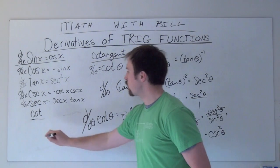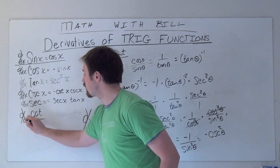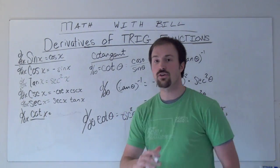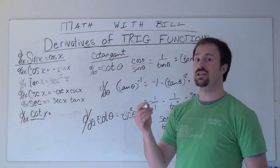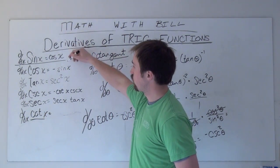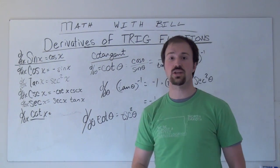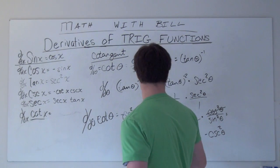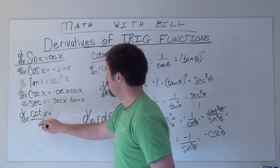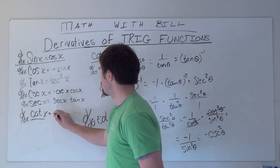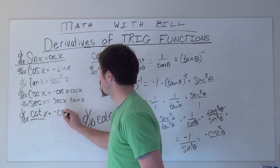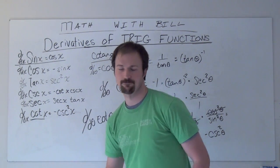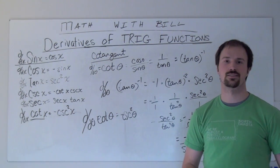That finishes out this video series. If you haven't yet viewed the limit definition to where we get our sine and cosine from, you should do that, because it might be required on a test that you take. Again, the derivative of cotangent is the opposite of cosecant squared. Thanks, and have a good day.